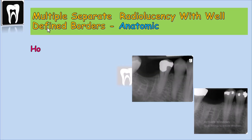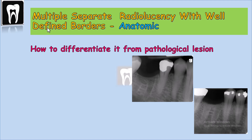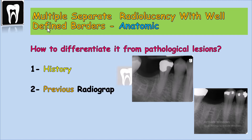It is very important to differentiate anatomic structures from pathologic lesions. First, take the history of the patient to see if they had tooth extraction during the past months. Or look for a previous x-ray — if we compare the two x-rays before and after, and the radiolucency had not changed size and was there all the time, it can probably be the bone marrow space. But if the radiolucency is becoming larger, there is doubt for pathologic lesions.